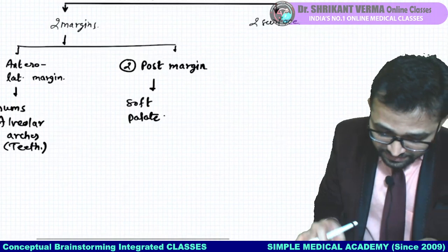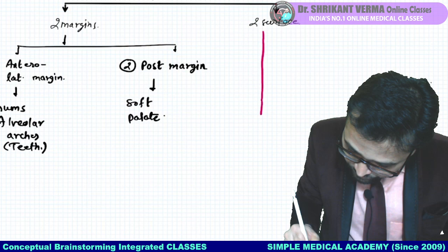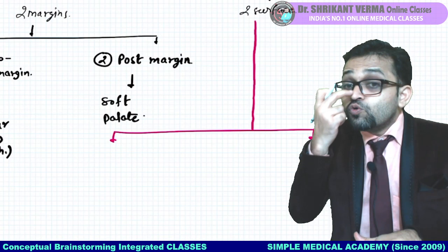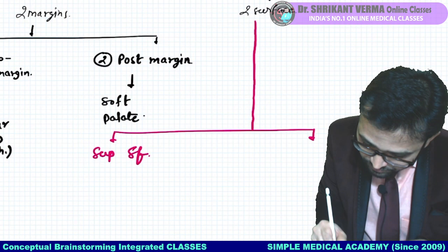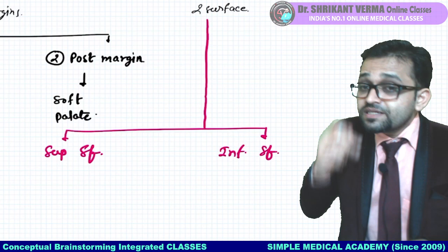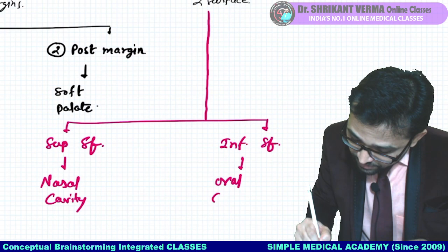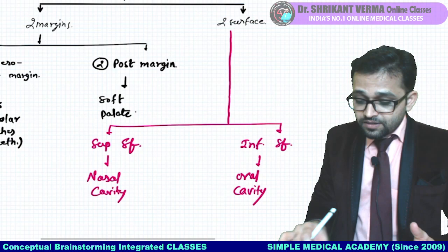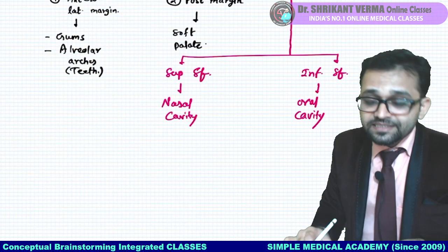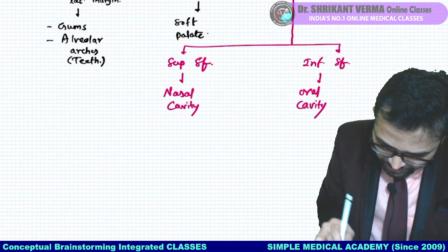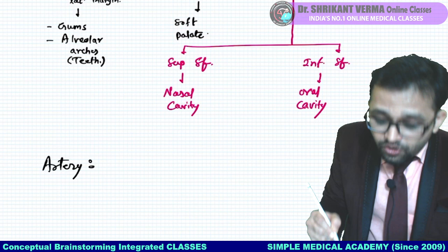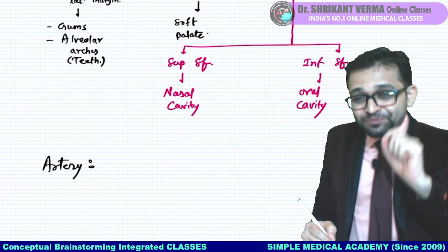When we are talking about surfaces: hard palate — above is the superior surface, below is the inferior surface. Above is toward the nose, so it is the nasal cavity. Below is toward the mouth, so that is our oral cavity.